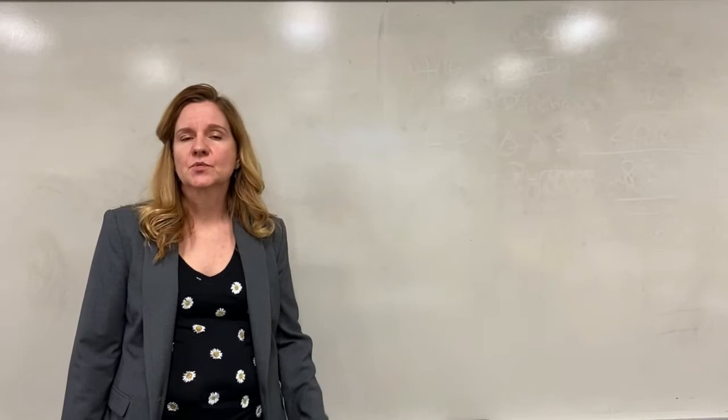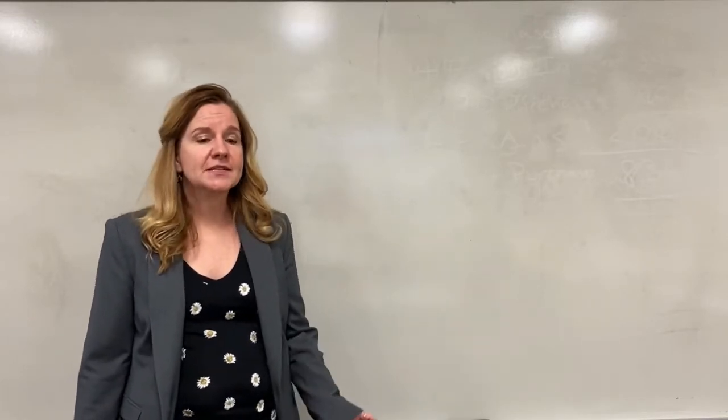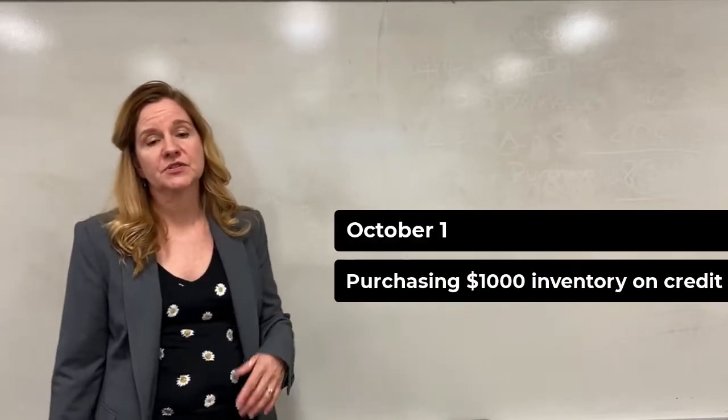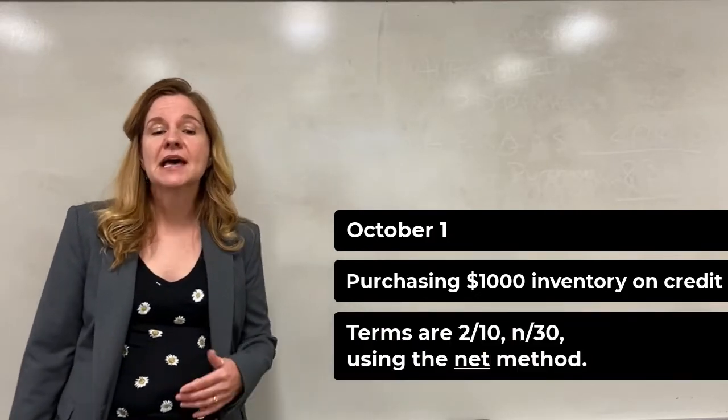This can be done with either periodic or perpetual and I'll show you the difference as we go through it. The first transaction is on October 1st and we're purchasing a thousand dollars of inventory on credit. The terms are 2/10 net 30 but again we're using the net method.